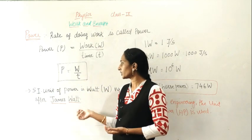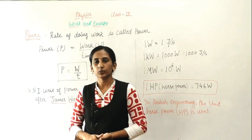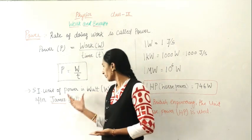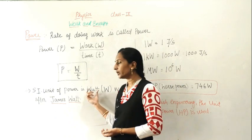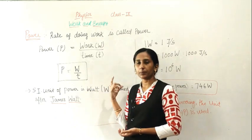And what is the unit of power now? The unit of power is Watt. It is named after James Watt and in short it is written as capital W.